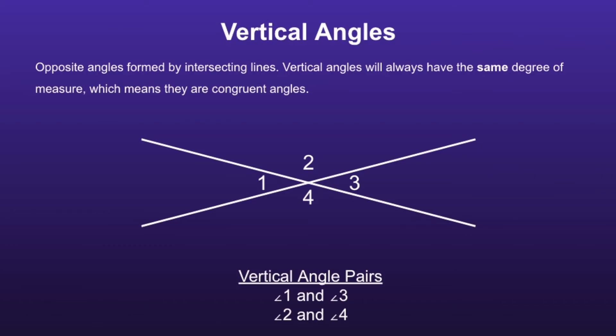The vertical angle pairs in this picture would be angles 1 and 3, and angle 2 and angle 4. We can tell angle 1 and angle 3 are vertical angles because they are opposite of one another. If angle 1 was 30 degrees, that also means angle 3 would be 30 degrees, because vertical angles always have the same degree of measure.